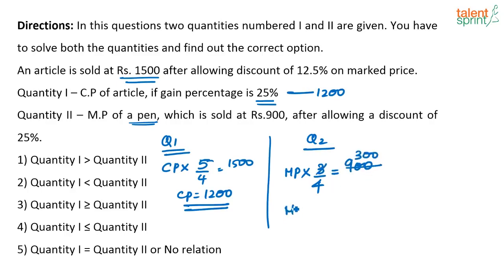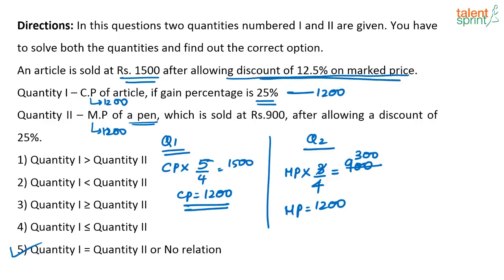So the marked price here is 1200. The marked price is 1200 and the cost price is also 1200. Both Quantity 1 and Quantity 2 are the same, so the answer is option 5: Q1 equals Q2. The information about the 12.5% on the marked price was not required at all here.